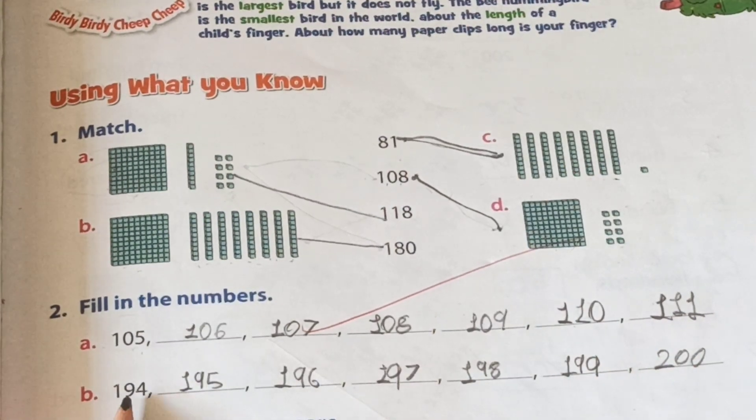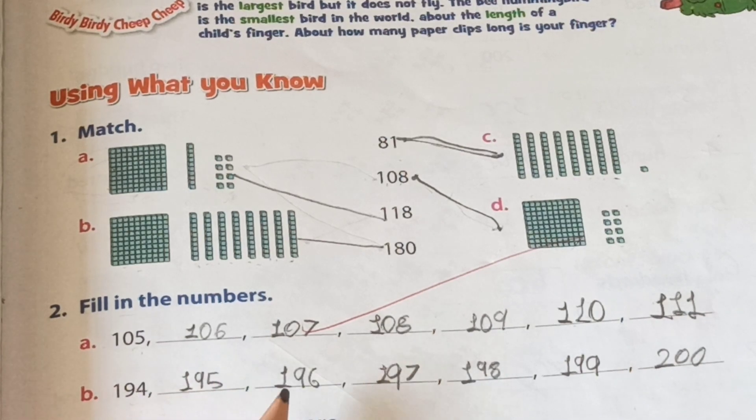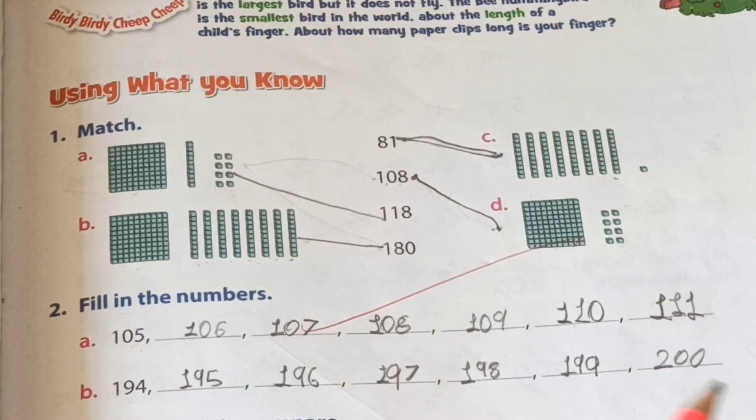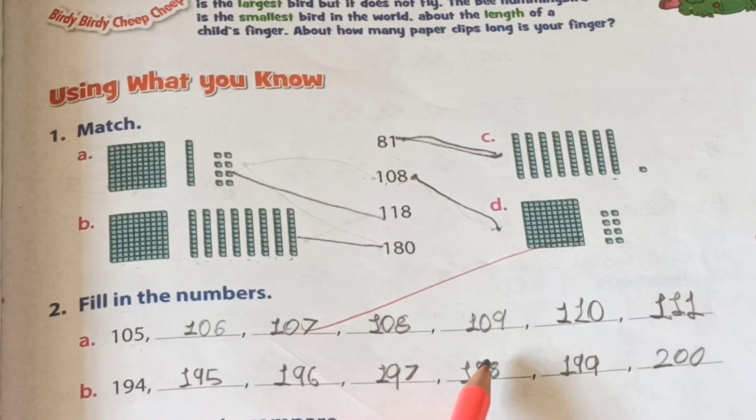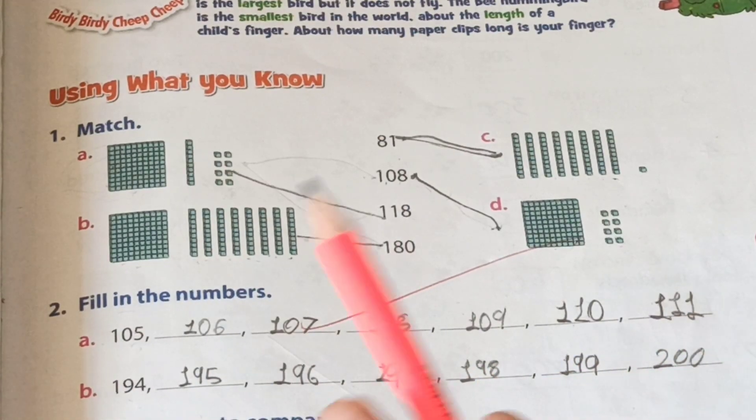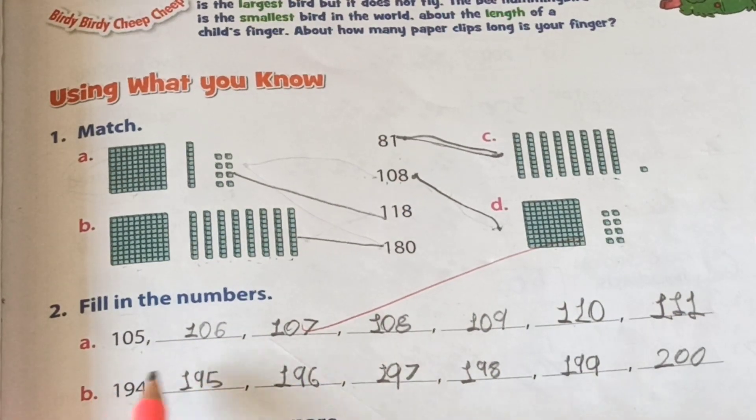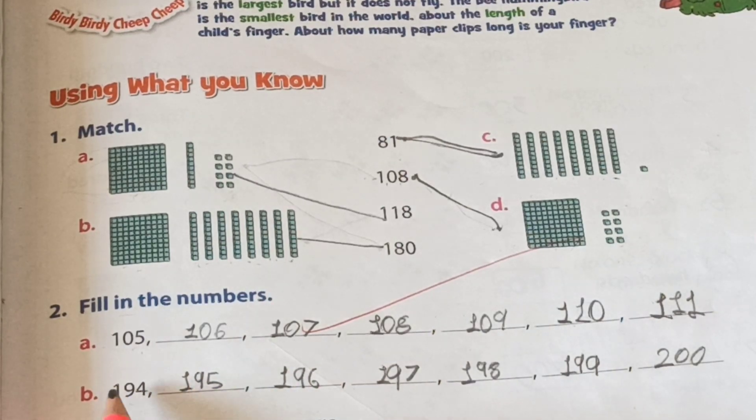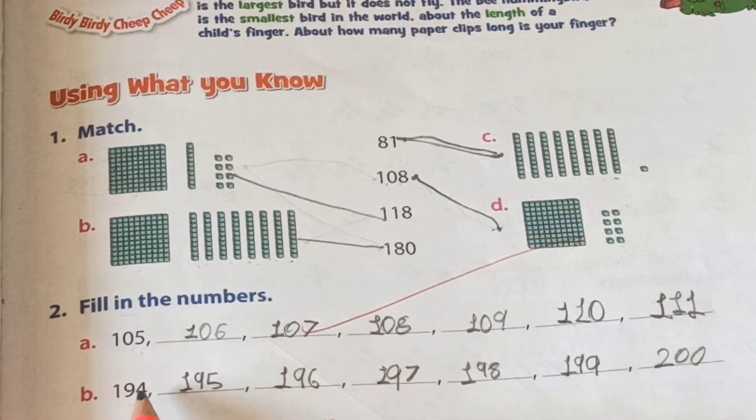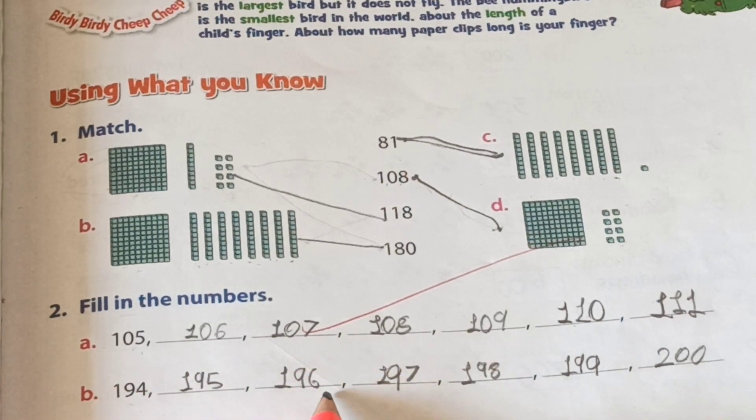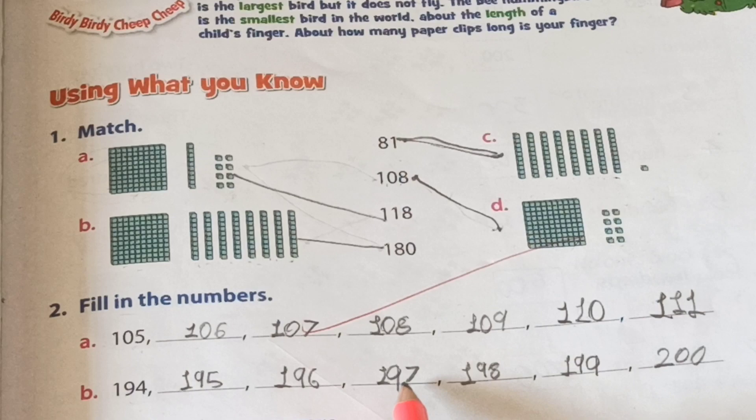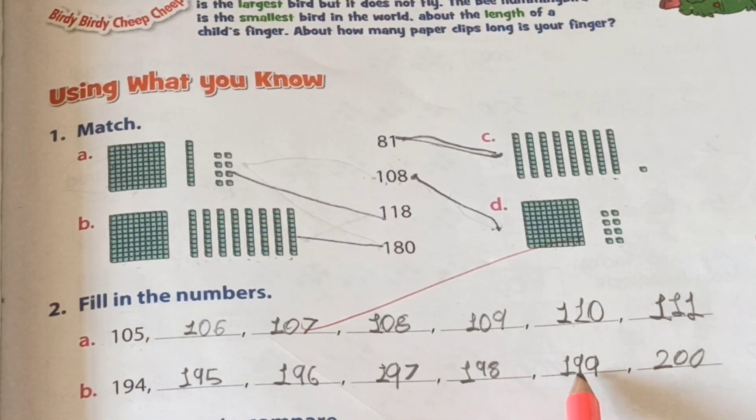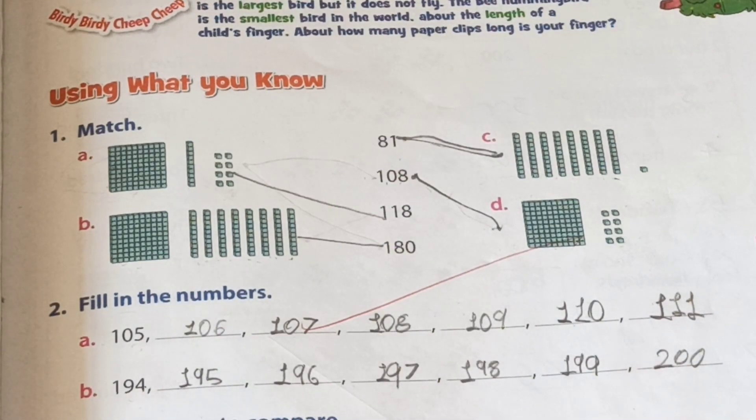That time B. Here, textbook given 194 and ahead given few blank lines. How many? One, two, three, four, five, six. Then let's come, we write down numbers here after 194. Which number? 195, 196, 197, then 198, 199, then 200. Hope you understood, enjoy. Very good.